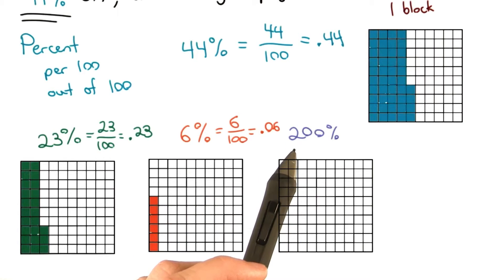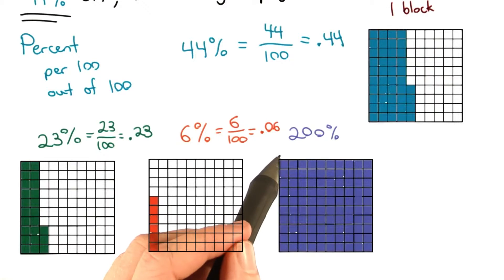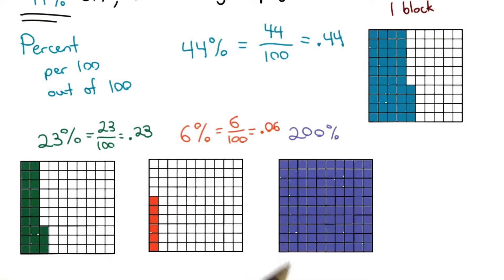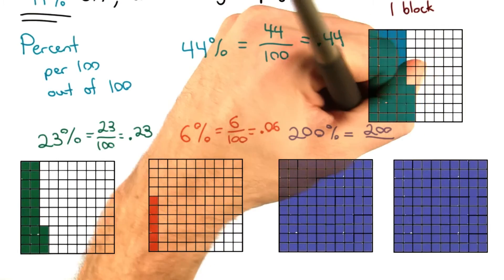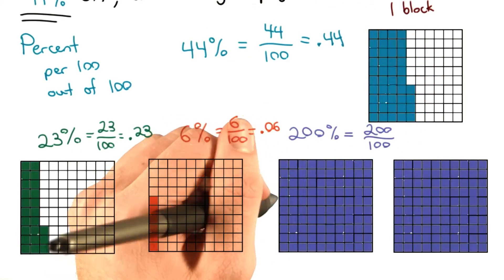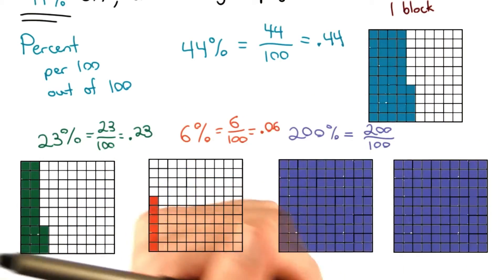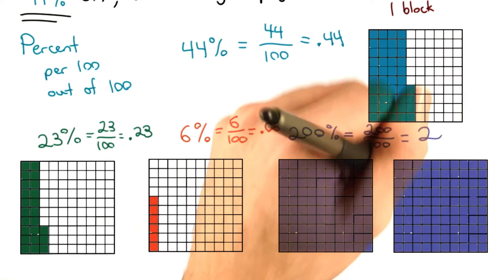For 200%, I know that I have to do something different. I could color in a hundred of the squares in this one block. So I have a hundred blocks shaded, but I need 200%. This is only a hundred out of a hundred. That's a hundred percent. Two hundred percent means 200 out of 100. I know one of these squares represents a hundredth. So I have 200 hundredths, or I just have 2, or 2 blocks.